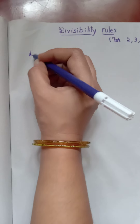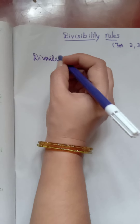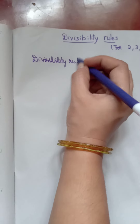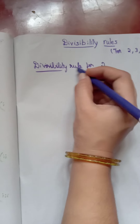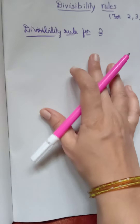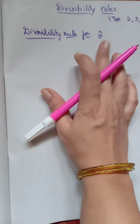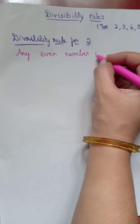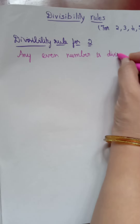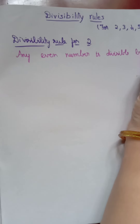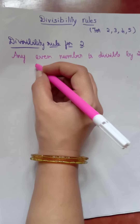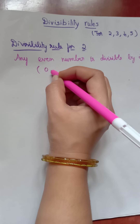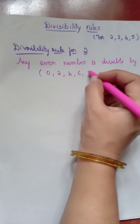First, let us check the divisibility rule for number 2. Any number is divisible by 2 if it is an even number. For a number to be an even number, it must end with 0, 2, 4, 6, or 8.